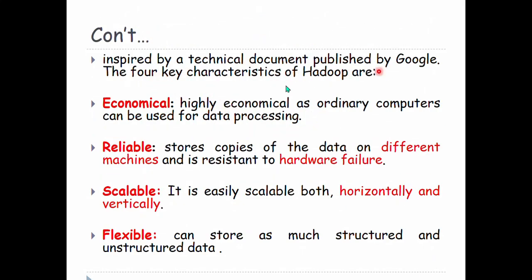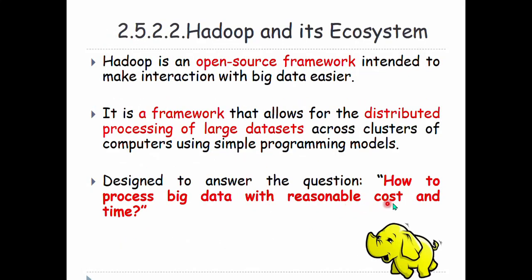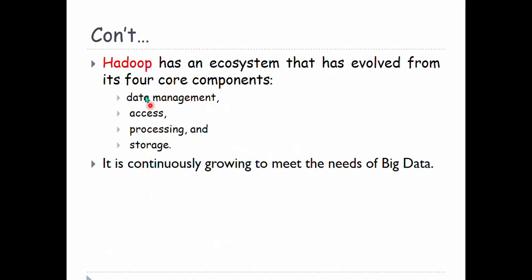Hadoop was inspired by technical documents published by Google. It has 4 key characteristics, and an ecosystem evolved from these four core components. Hadoop is economical because ordinary computers can be used for data processing.